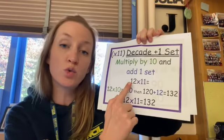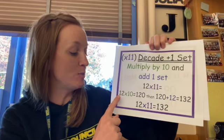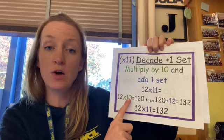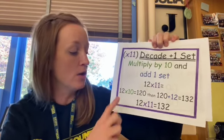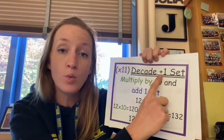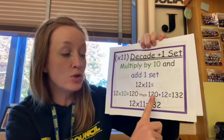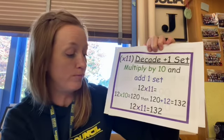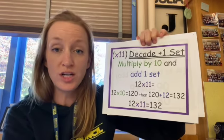So let's look at this one, 12 times 11. I could think of 12 times 11 as being 12 times 10 or my decade fact, and 12 times 10 I know because all I have to do is pop a zero on the end. So 12 times 10 is 120, and now I'm going to add one more set. So I've got 120, and then I do 120 plus 12 more and I get 132. So in other words, 12 times 11 is 132.